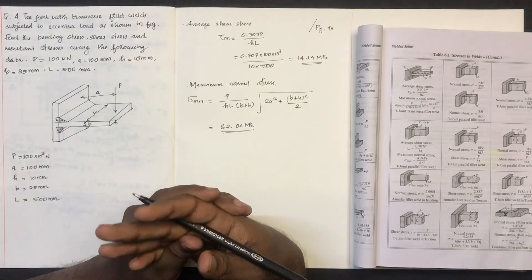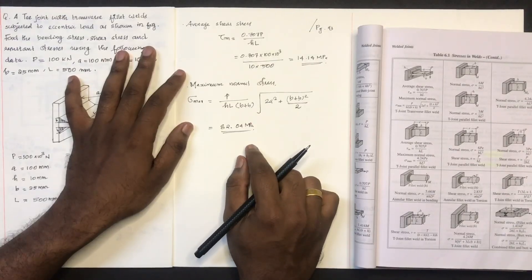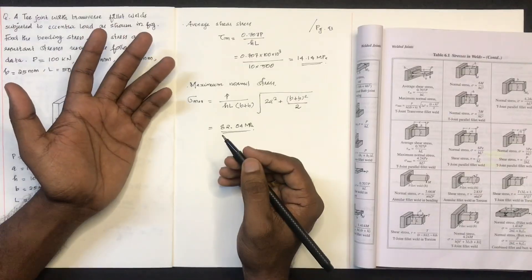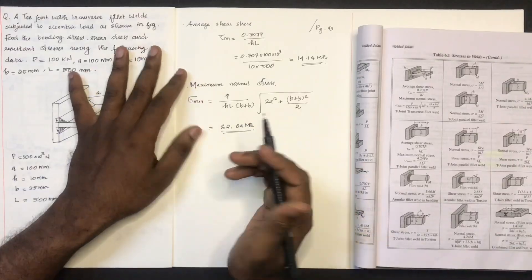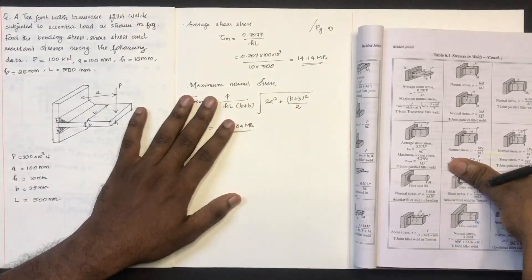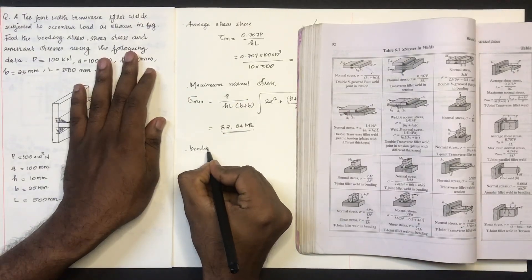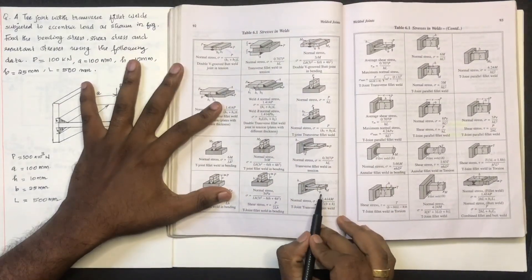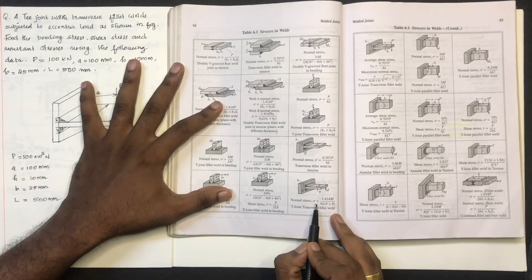This is the bending stress. The maximum bending stress is very important. This is the figure of the bending stress, representing the normal bending stress distribution.